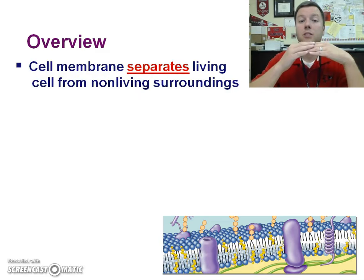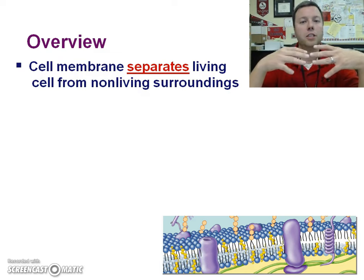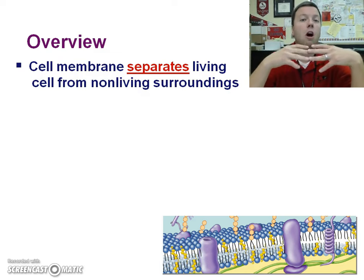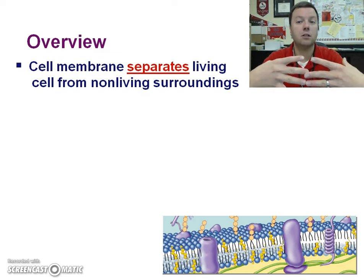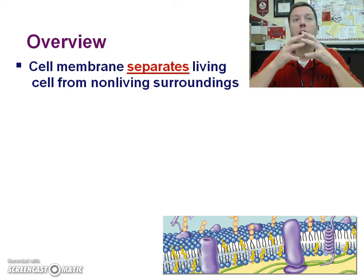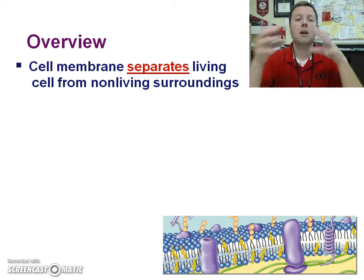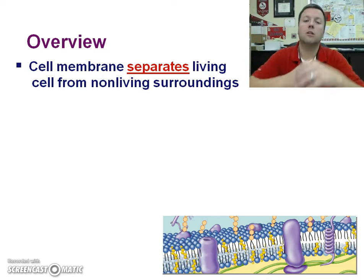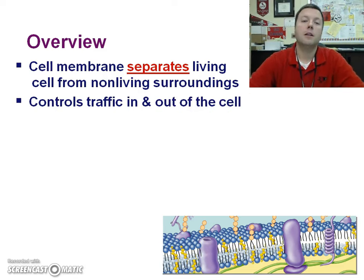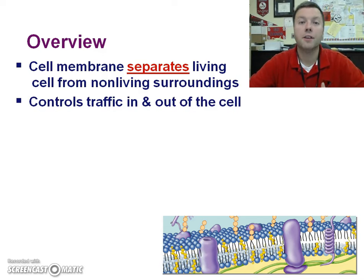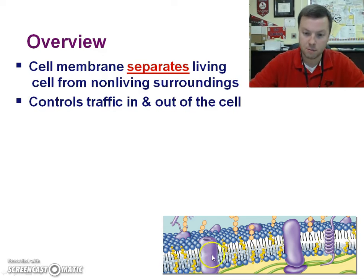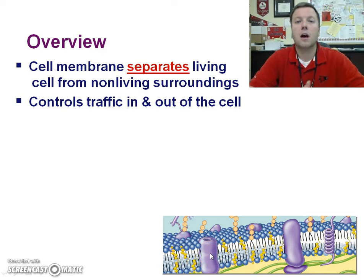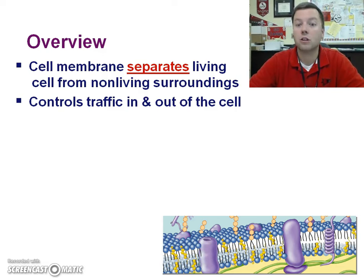The cell membrane separates the living cell from its non-living surroundings. Remember, one of the criteria of life is that all living things are made of cells. So it has to have a membrane or barrier to separate it from the non-living extracellular world. This barrier controls traffic into and out of the cell — it'll let some things in easily, while others have to go through via a protein channel. Other things can get out easily or have to be pumped out using energy.